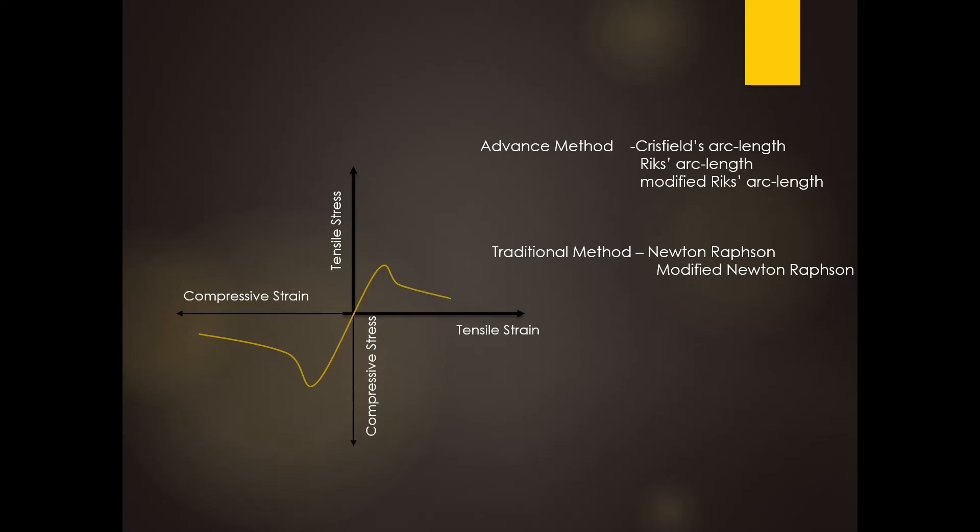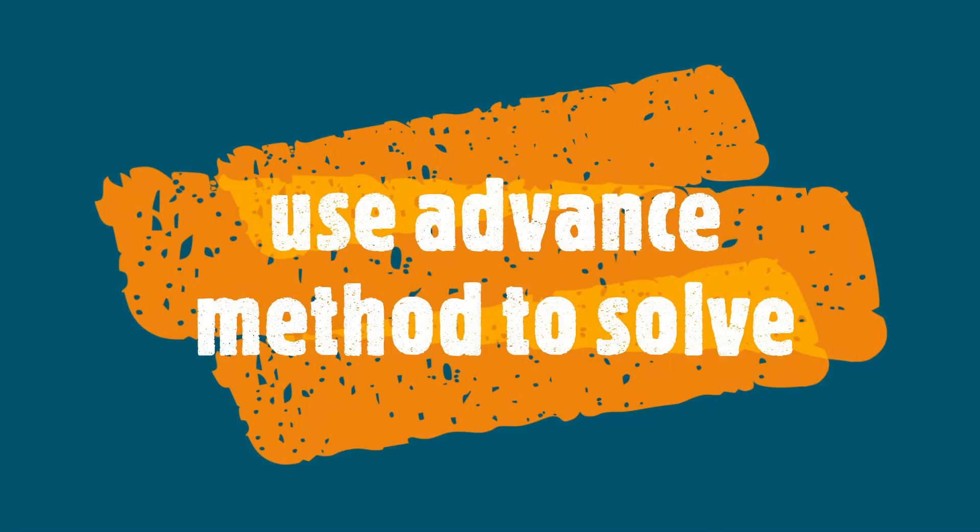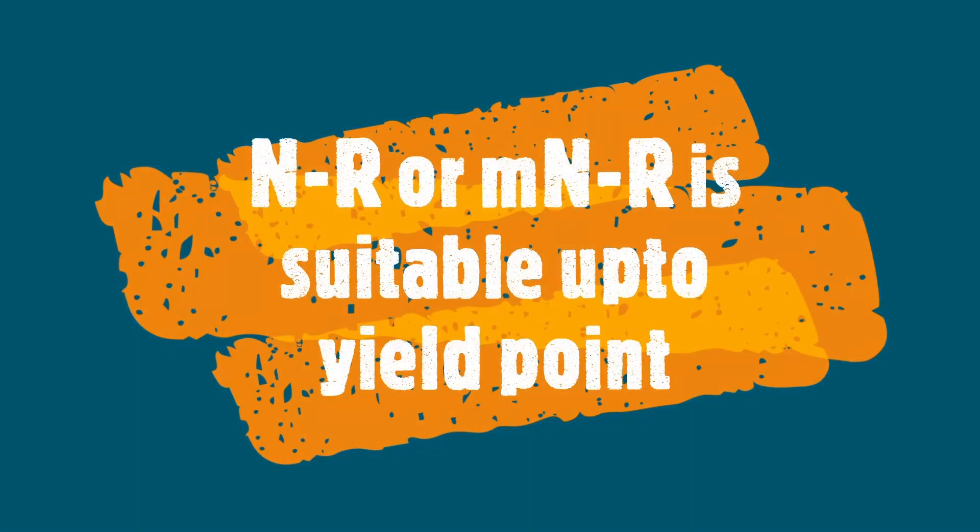we use the Crisfield arc-length or modified arc-length method, which have the capability to solve the problem after the yielding point. The key learning from this study is that we should use advanced methods over traditional methods when dealing with strain softening materials.